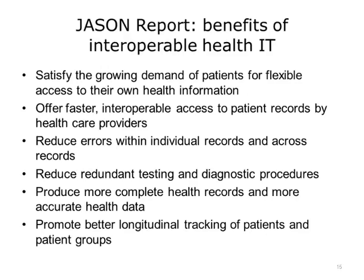In April 2014, the Jason Group published a report entitled A Robust Health Data Infrastructure. The Jason Group is an independent group of scientists that advise the federal government. This report helped shape the ONC interoperability vision. The Jason Report listed the following benefits of interoperable health IT: 1. It can satisfy the growing demand of patients for flexible access to their own health information. 2. It can offer faster interoperable access to patient records by health care providers. 3. It can reduce errors within individual records and across records. 4. It can reduce redundant testing and diagnostic procedures. 5. It can produce more complete health records and more accurate health data, and promote better longitudinal tracking of patients and patient groups.